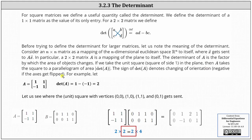Let's consider the matrix A below. Notice the determinant is equal to one times one minus one times negative one, which is equal to positive two. So because the area of the unit square is one, if we take matrix A and multiply it by matrix B where matrix B contains the vertices of a unit square as columns, then the area should double because the absolute value of the determinant is equal to two.